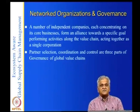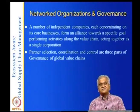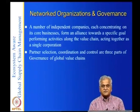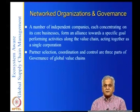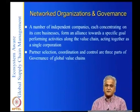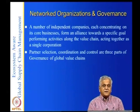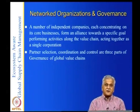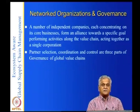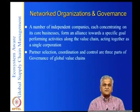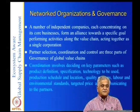Partner selection, coordination, and control are the three parts of governance of global value chains. When you have so many independent companies — somebody produces cotton, somebody does sewing, somebody produces zippers — somebody needs to put them all together. Who tells them what zipper is for a trouser, a shirt, or a coat? Depending on the design and manufacture, you select the partners, coordinate their activities, and control them for quality, price, and everything that goes wrong.